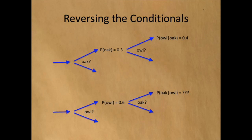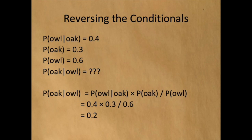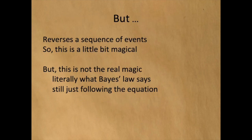Bayes' lets us switch the order of doing the tests without doing the work. So if we know the results of doing oak first and then owl, we can compute the results as if we had done owl first and then oak. We know the probability that a tree contains an owl if it is an oak is 0.4, the probability that a tree is an oak is 0.3, and the probability that a tree contains an owl is 0.6. To compute the odds that a tree is an oak if an owl lives in it, we start with Bayes' Law, plug in the assigned probabilities, and simplify. We get 0.2. This is literally what Bayes' Law says — it is still just following the equation. There is a little magic in that we can reorder events using time travel, but Bayes can do more.